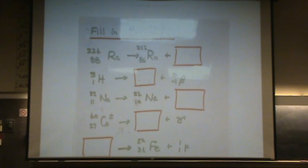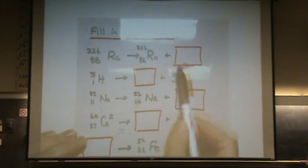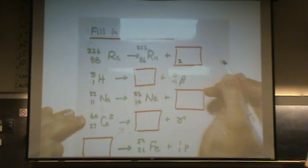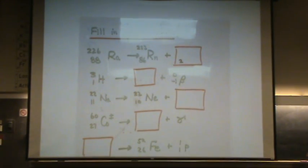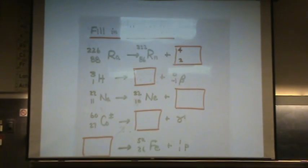All you need to do is add and subtract what you see. So 88 is 86 plus, well it has to be 2, so 86 plus 2 is 88. 222 plus 4 is 226. What is that? That's alpha.